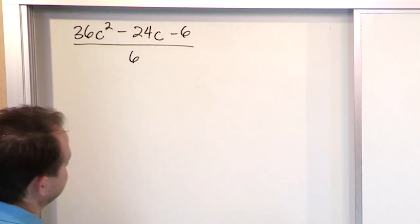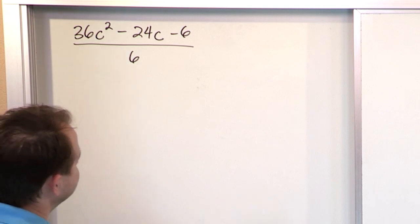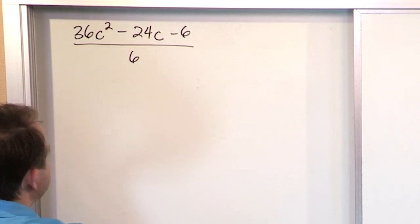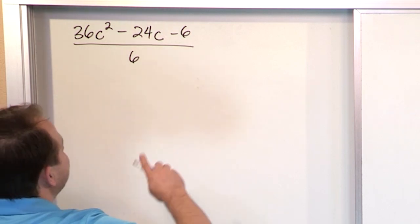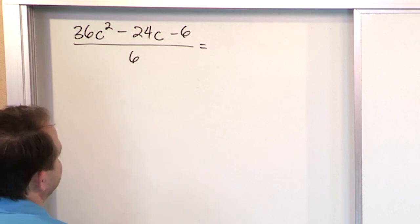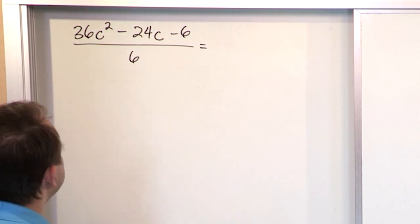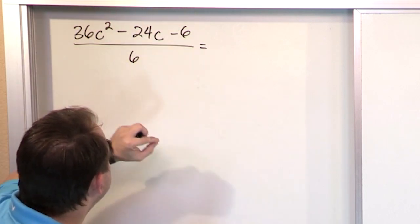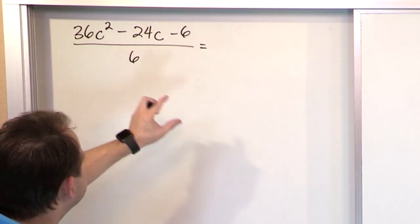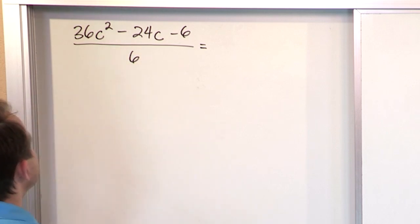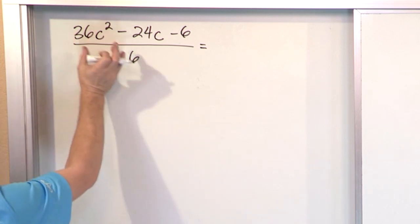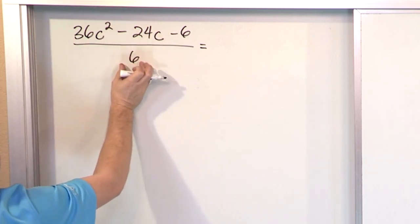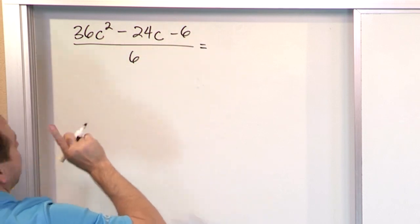You can't add anything there, and you don't have anything on the bottom, so you might not think you can do anything. But then you apply the rule from the last section: if you have a complicated expression on top added or subtracted, divided by a single thing, you can write it as each term divided by that single thing separately.